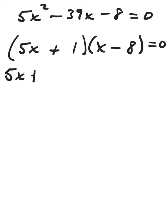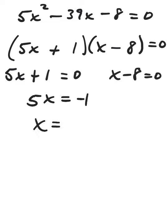Once you feel good about your factoring, set each factor equal to 0. Subtract 1. Divide by 5. And then for the other one, add 8. And we have our two solutions, negative 1 fifth and 8.